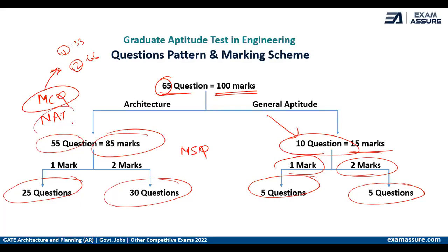NAT is the numerical answer type question. If you attempt it and are correct, you will score one or two marks. If you didn't attempt or gave the wrong answer, you will get zero marks. There is no negative marking for NAT.